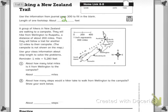One mile equals 5,280 feet. About how many total miles is it from Wellington to the campsite? We had 200 miles and 12 miles — it wants the total. When you see the word total, you should know what operation you need to do.